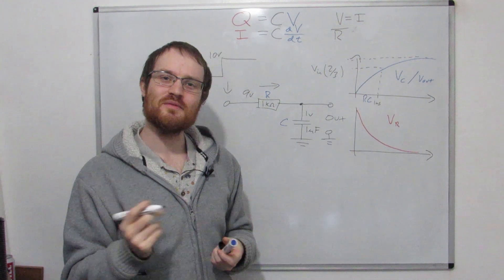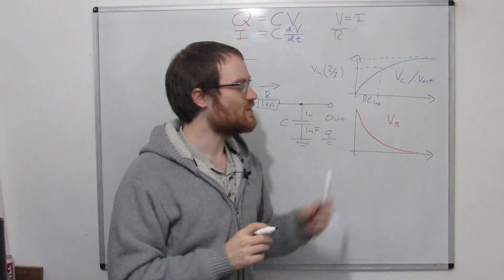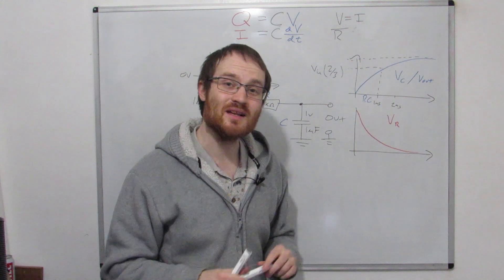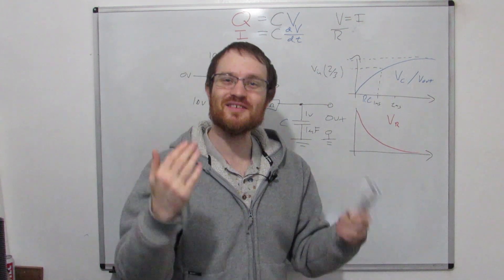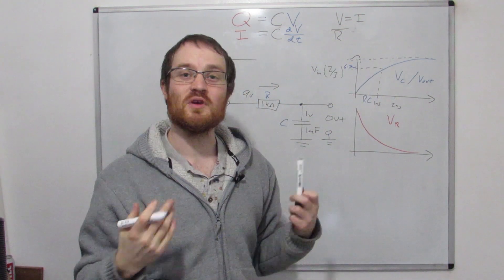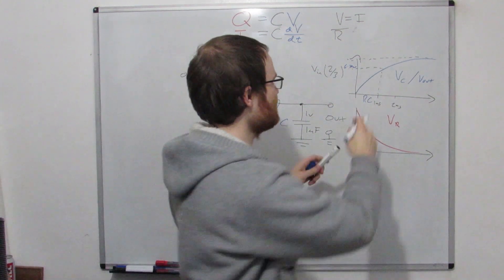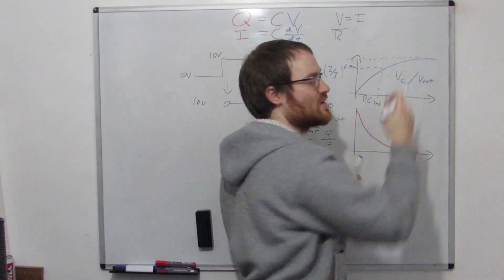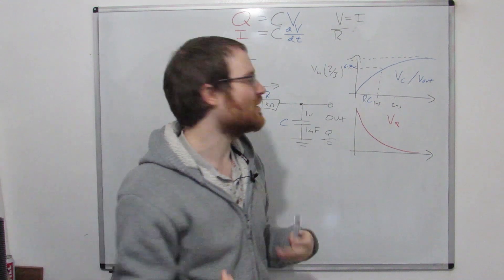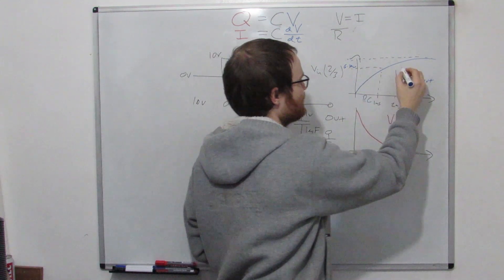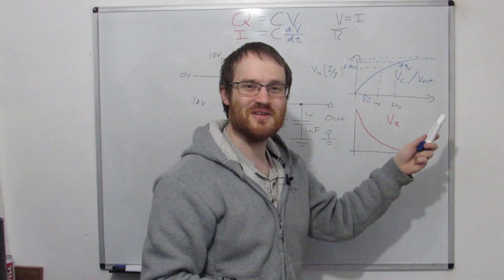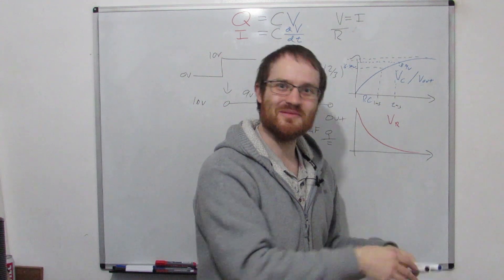Maybe pause the video and think: what's the voltage going to be after two milliseconds? After two milliseconds, we'll be two-thirds of the rest of the way there. If we're now starting at 6.7 volts, we've got 3.3 volts left over, so after another time constant we're going to be two-thirds of the rest of the way there — that's 6.7 plus 2.2, which is two-thirds of 3.3. So we'll be at 8.9 volts. And then after another time constant, we'll be two-thirds of the way there again, and another, and another.